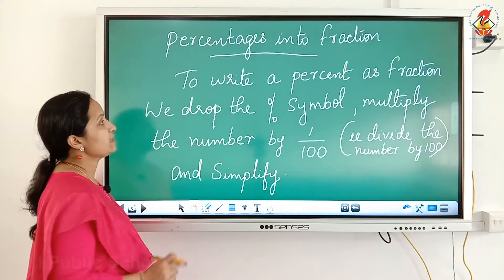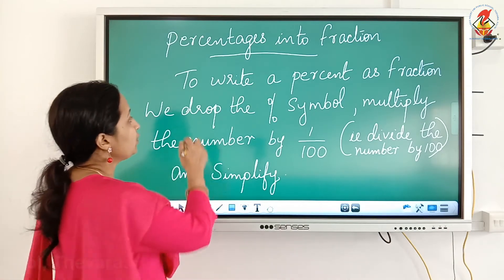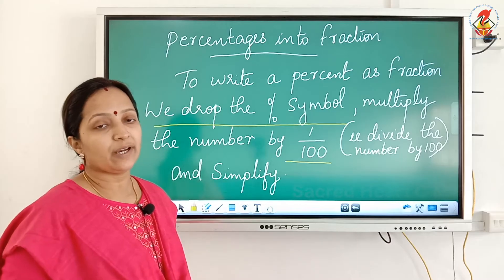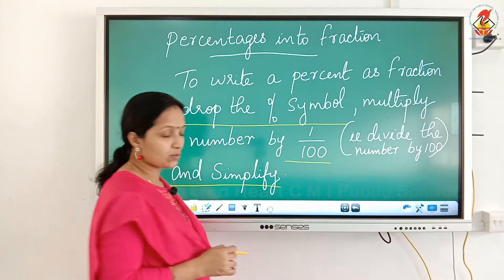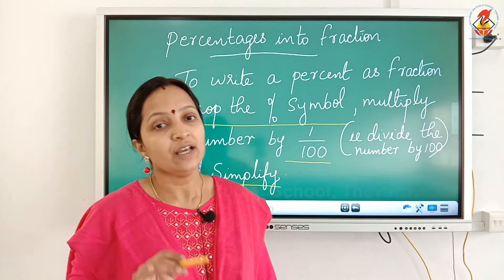Now, how to convert percent to a fraction? To write a percent or percentage as a fraction, we drop the percentage sign and multiply the number by 1 by 100. Multiplying by 1 by 100 means just divide the number by 100 and simplify. Simplify means if it is a fraction, you have to reduce the fraction to its lowest term.